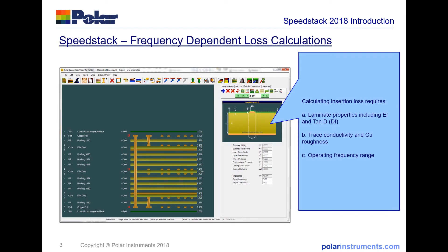To give SpeedStack the capability of displaying and documenting the insertion loss, it now needs the laminate properties, including the loss tangent, tan delta — sometimes called DF or the dissipation factor — added into the interface, plus the trace conductivity and the copper roughness. You can also add an operating frequency range.